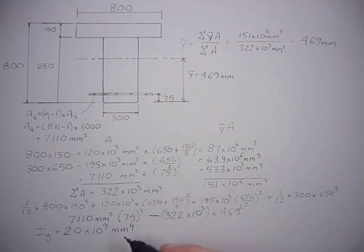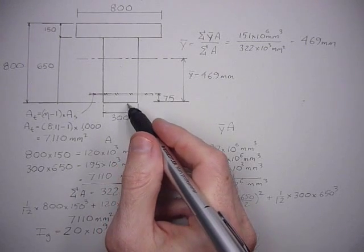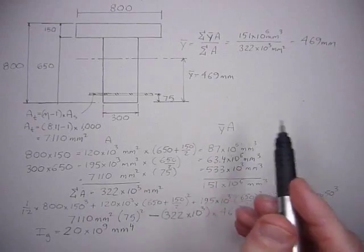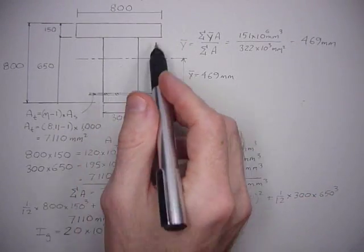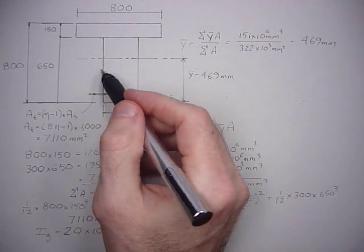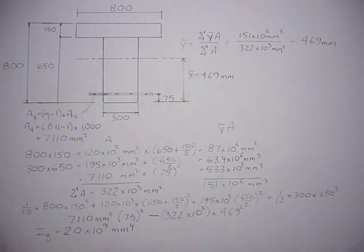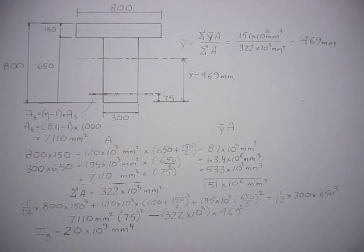From there we can easily calculate the cracking moment if we add the tensile capacity of the concrete. But we'll leave it at that. In the next tutorial we'll solve for a T section where the bottom fibers have cracked and the neutral axis shifted up, similar to what we did for the rectangular section.